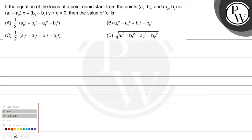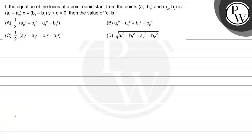Hello everyone. Let us read the question. If the equation of locus of a point equidistant from the points (a1, b1) and (a2, b2) is (a1 minus a2)x plus (b1 minus b2)y plus c equals 0, then the value of c is — option A: 1/2 (a2² + b2² − a1² − b1²).